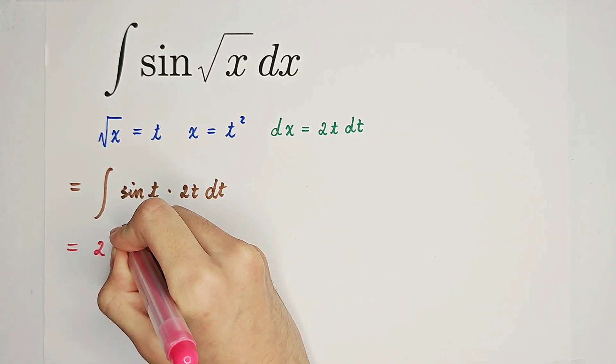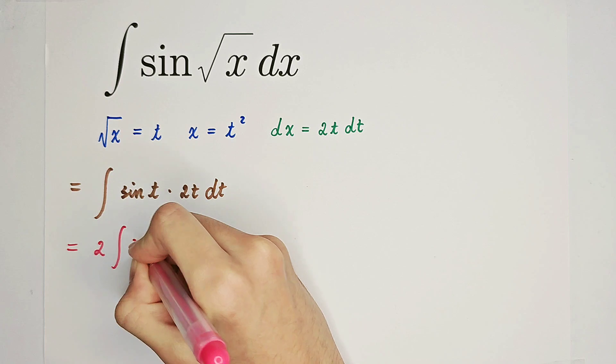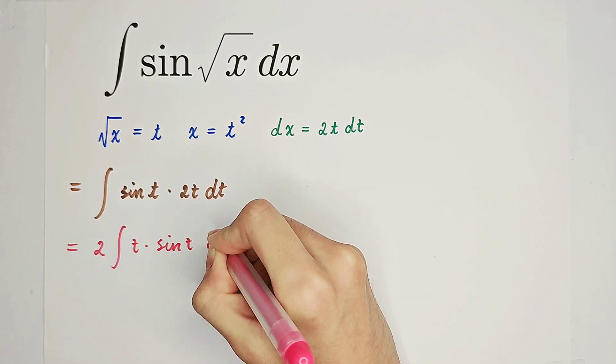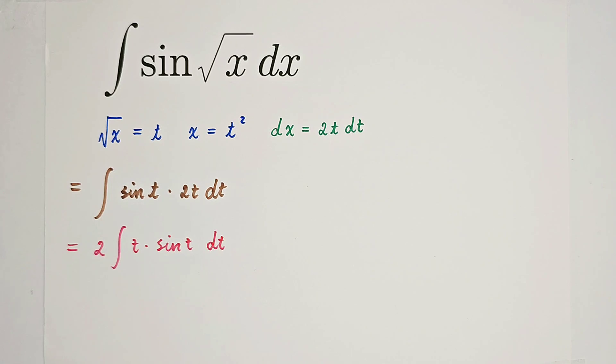So it's 2t times the integral of t times sine of t dt. How to solve for this integral? By using integration by parts.